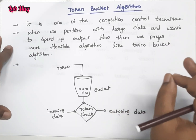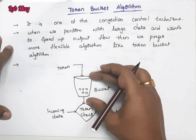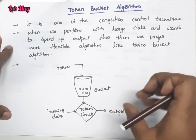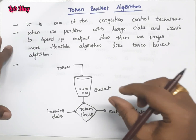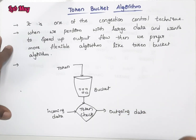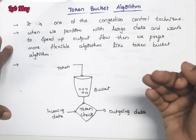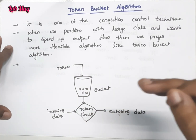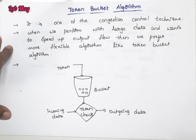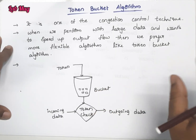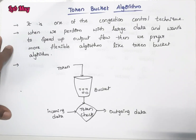The first technique is the Leaky Bucket Algorithm. In the leaky bucket, data is pumped out of the bucket and sent forward at a fixed rate. Even if data comes in at a burst rate, it is sent out at a normal fixed rate. So the burst flow is converted to a normal flow.